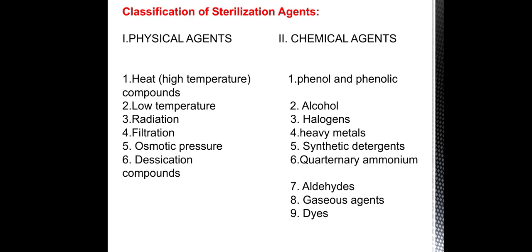Classification of sterilization agents. There are two types of agents. One is physical agent, second one is chemical agent. Physical agents include heat, low temperature, radiation, filtration, osmotic pressure, and desiccation. Chemical agents include phenyl and phenolic compounds, alcohol, halogens, heavy metals, synthetic detergent, quaternary ammonium compounds, aldehyde, gaseous agents, and dye.